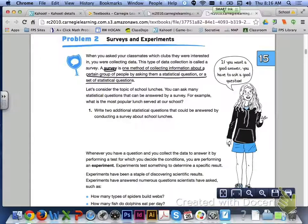Let's move over to problem two on page 1001 and talk about surveys and experiments. Up at the top of the page, it says, When you ask your classmates which clubs they were interested in, you were collecting data. We skipped that portion of problem one, so you can disregard that. All we're going to worry about are surveys and experiments now moving forward. A survey is one method of collecting information about a certain group of people by asking them a statistical question or a set of statistical questions.